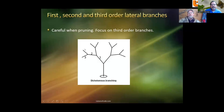First, second, and third order lateral branches: you want to be very careful when pruning, because we want to prune the third or even fourth order lateral branches first, removing as little as possible. Arborists sometimes talk about these first, second, and third order lateral branches. This branching form is called dichotomous branching.